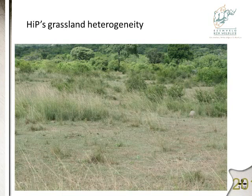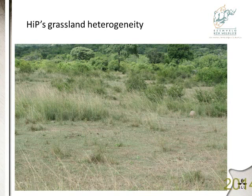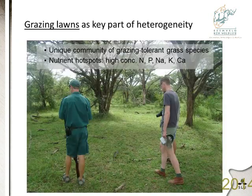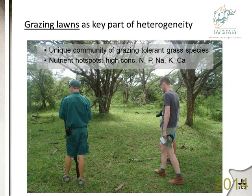One of the key features of HiP is that it has an enormous grassland heterogeneity, and it's mostly driven by these grazing lawns — very short patches consisting of a unique community of grazing-tolerant grass species. They also often form nutrient hot spots, with very high concentrations of nitrogen, phosphorus, and things like sodium and potassium.